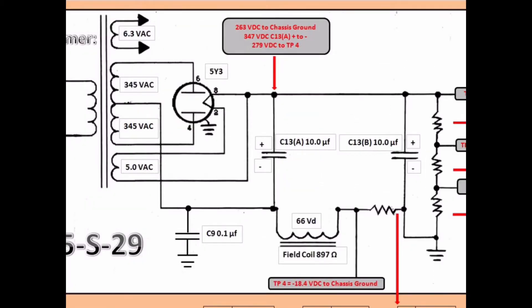Let's take a look at the voltages that I referenced as I was doing my documentation. 263 volts DC is referenced back to chassis ground from this point, which is the top side of the electrolytic capacitor C13A. That's my B plus voltage for the radio.